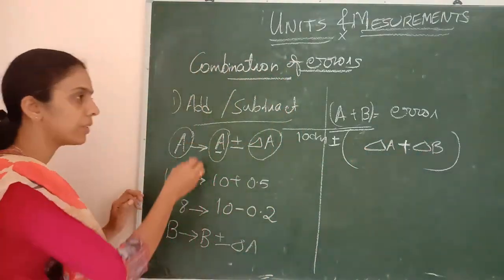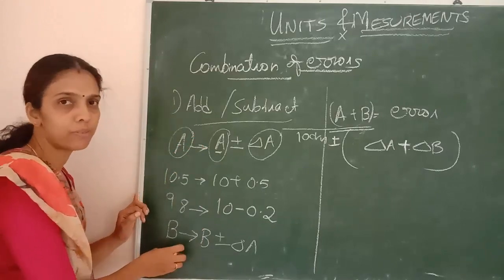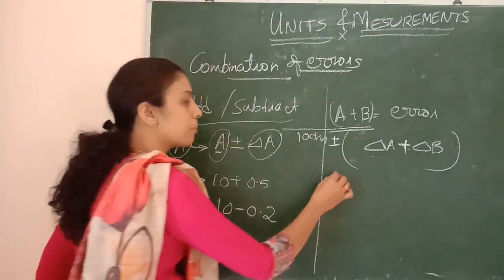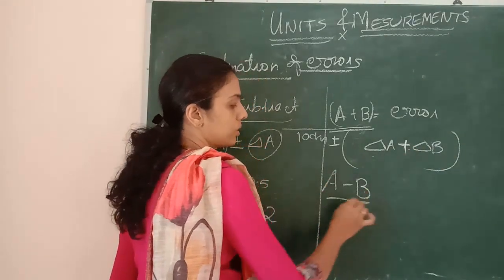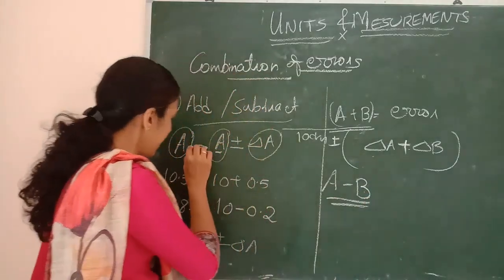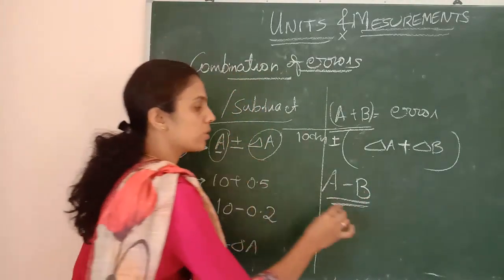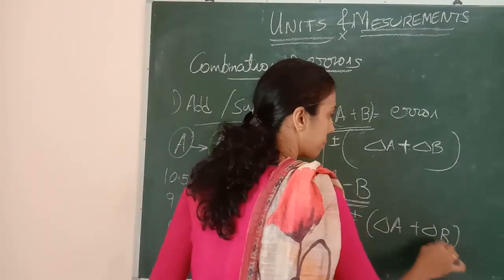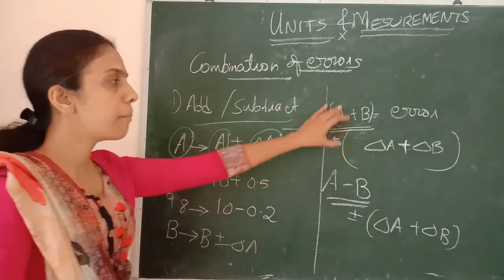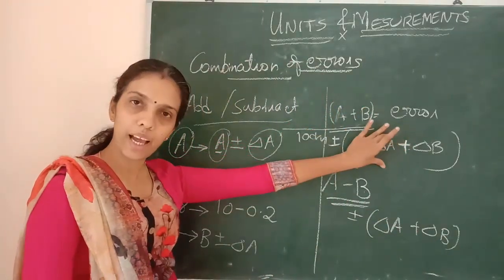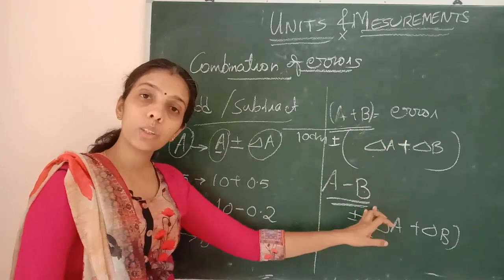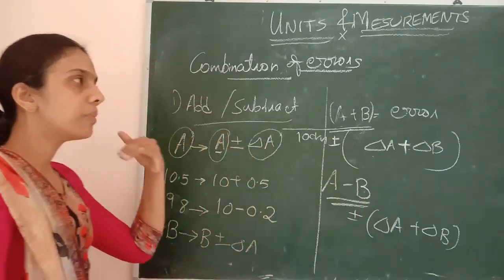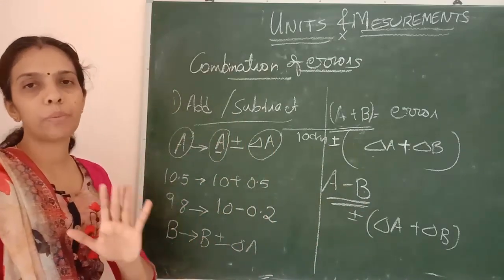If we are adding these two measured values, errors also will be added up. And suppose if I am subtracting those two values — A minus B — then also the errors will be added up. So whether we are subtracting or adding, the errors will always be added up.